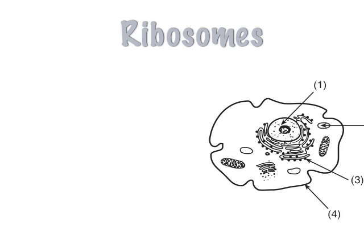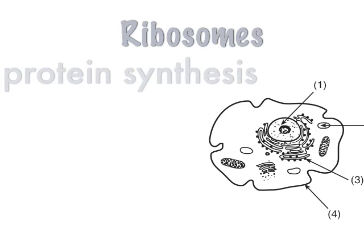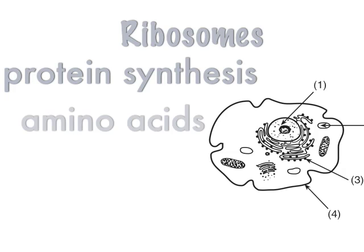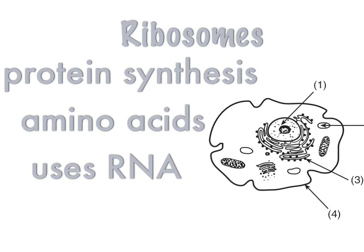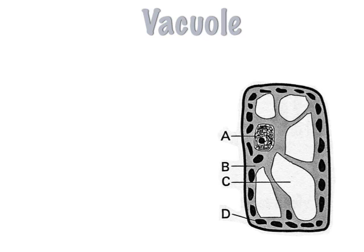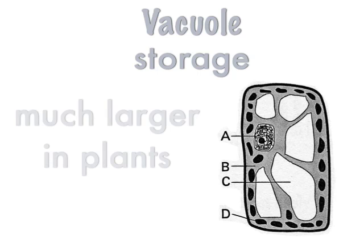Ribosomes are little dots, as you see on the cell there labeled number three. They're pretty much the location of protein synthesis. Sometimes the Regents won't mention proteins with ribosomes — they'll mention amino acids, which are the building blocks of proteins, so be careful. Ribosomes use RNA. Vacuoles are the location for storage in a cell, and in plants they're much larger and they hold water.